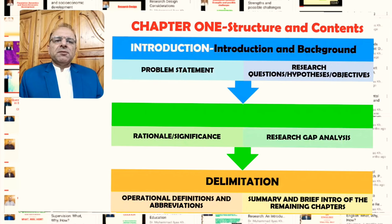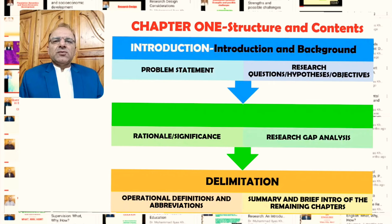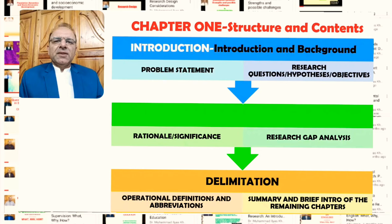It is generally good practice to give a brief summary at the end of the whole introduction chapter, along with a general brief introduction in a few sentences to the remaining chapters of the thesis. If that is given towards the end of Chapter 1, it provides a general idea to the reader of what they can expect in the rest of the thesis. This is the general structure of Chapter 1. Of course, there might be variations across universities, institutions, and different disciplines, but generally the introduction chapter is expected to have these topics and subtopics.